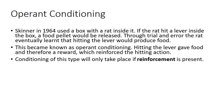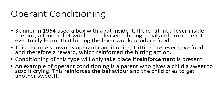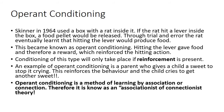Conditioning of this type will only take place if there is some sort of reinforcement, which in this case was the food for the rat. Another example of operant conditioning is a parent who gives a child a sweet to stop their crying - unfortunately this reinforces the behavior and the child might cry to get another sweet. Operant conditioning is a method of learning by association or connection, therefore known as an associationist or connectionist theory.